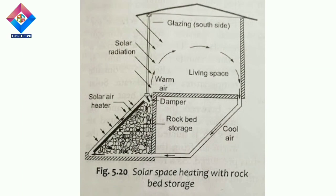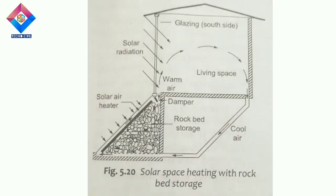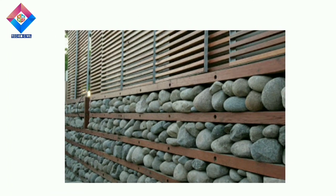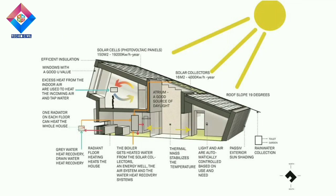In another variation, the thermal storage mass is provided above a metallic roof of the building instead of a wall. Another example of a solar space heating system comes with a collector-cum-rock-bed storage system integrated with the apartment. During daytime, when direct gain through the glass is sufficient, hot air from the air heater is not allowed to enter the room; the available thermal energy is stored in the rock bed to be used later during night.